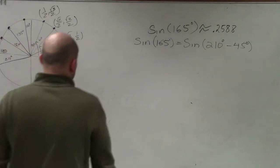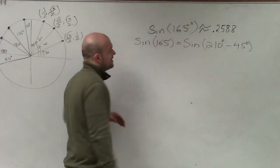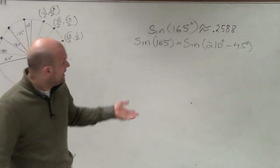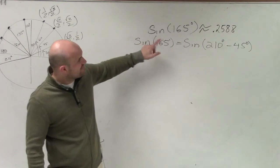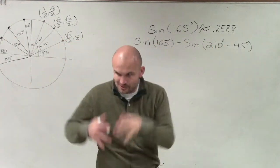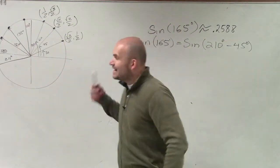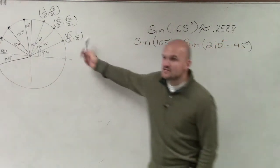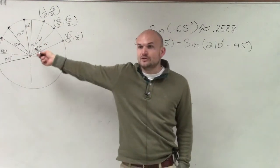So how are we going to solve this? If we understand that 165 degrees is approximately 0.2588, and we realize that 165 can be rewritten as sine of 210 minus 45 degrees, we're using this subtraction formula. The reason why we chose 210 and 45 degrees is because we can evaluate those angles on the unit circle.